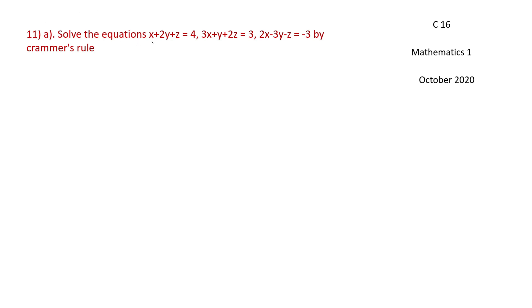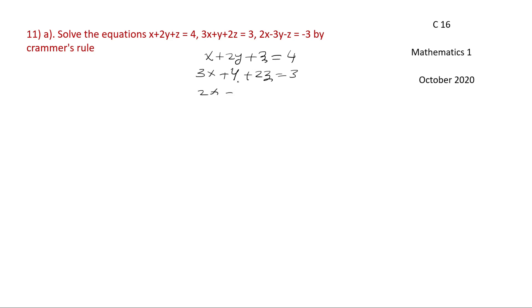Okay, 11a: solve the equations. x plus 2y plus z equal to 4; 3x plus y plus 2z equal to 3; 2x minus 3y minus z equal to minus 2.